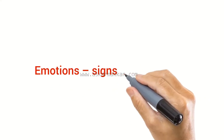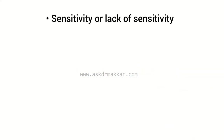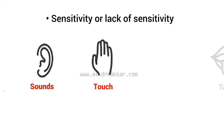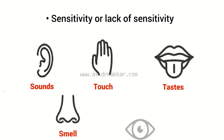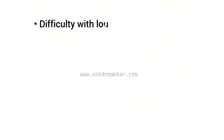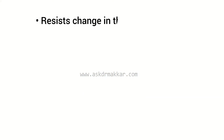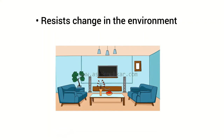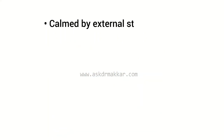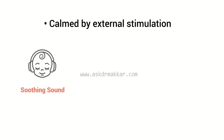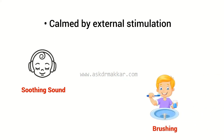Emotions signs and symptoms: sensitivity or lack of sensitivity to sounds, textures, touch, tastes, smells, or light. Difficulty with loud or sudden sounds. Resists change in the environment — people, places, objects. Calmed by external stimulation such as soothing sound, brushing, rotating objects, or constant pressure.